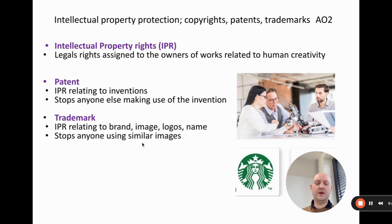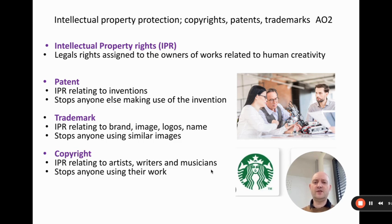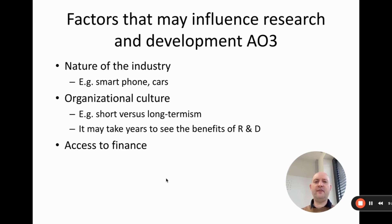A trademark is related to brand images, logos, and names, and it stops anyone else using similar images. Here we have the Starbucks logo — you've probably seen the 'TM' symbol in various places, which means trademark, and means no one else can use the Starbucks logo or anything legally deemed too similar to it. The final IPR type is copyright, which relates to work produced by artists, writers, and musicians, and it stops anyone else from using their work.